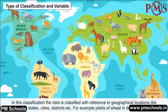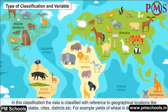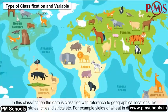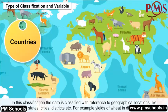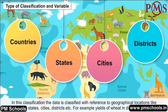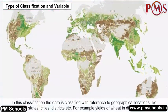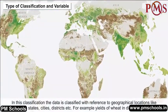In geographical (spatial) classification, the data is classified with reference to geographical locations like countries, states, cities, districts, etc. For example, yields of wheat in different countries.